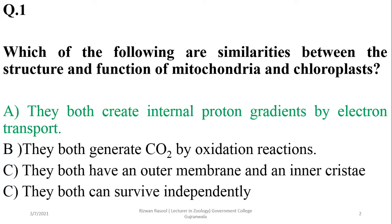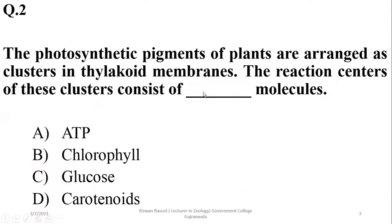They do not generate CO2 collectively, because CO2 is produced only by mitochondria while chloroplasts make use of it. They both have an outer membrane and an inner membrane, but cristae are a characteristic of mitochondria only. They both can survive independently — no, they cannot survive independently actually.